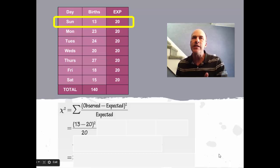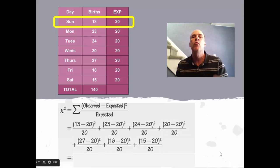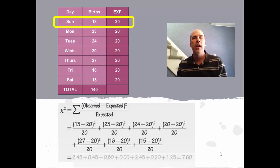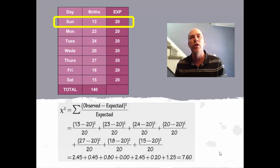We calculate that for each of the seven days of the week. They're pretty easy calculations, just a little tedious. Monday: 23 minus 20 squared over 20. Tuesday: 24 minus 20 squared over 20, and so on for Wednesday, Thursday, Friday, and Saturday. Put them all in your calculator and you will get a chi-squared statistic of 7.60. It's certainly different from zero. Just how unusual is getting a 7.60? That's what this test is going to be all about.